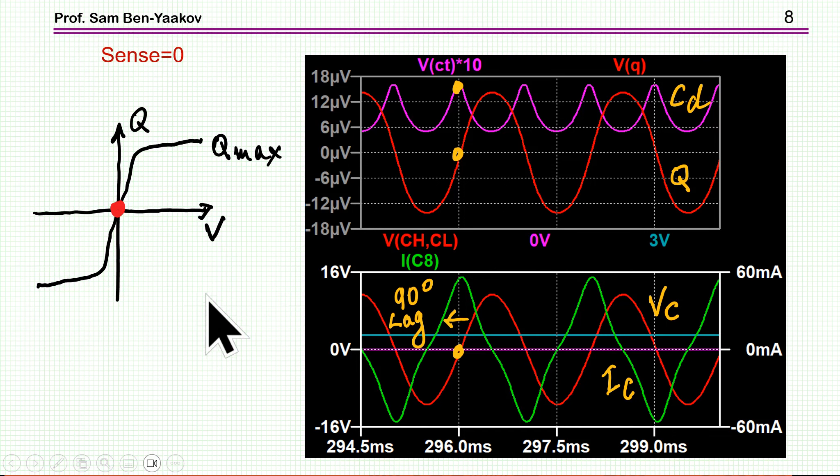Here are some of the results, the simulation results. This is now the QV curve. I'm assuming now there is no DC fed in. We are starting at zero. There's no voltage across the capacitor. No charge. We are at this point. This red is the voltage across the capacitor. The green is the current through it. This red now is the charge of the capacitor. And this line here is the local capacitance.